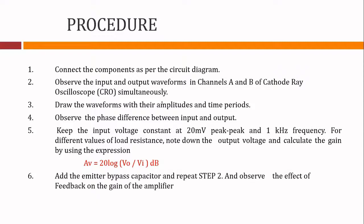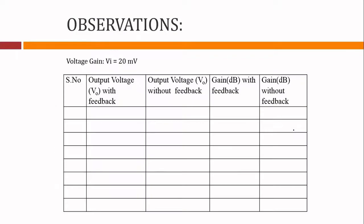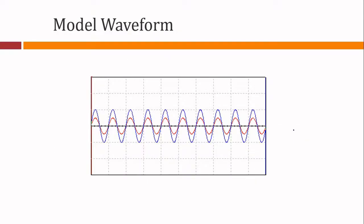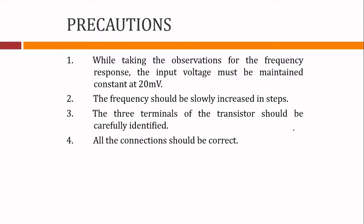When mounting a circuit, ensure continuity between circuit components. The important procedural point is to keep the input voltage constant at 20 mV peak-to-peak, using the function generator. This is the observations table along with the model waveforms — the blue signal is the input and red is the output voltage. These are the precautions: while taking observations for the frequency response, the input voltage must be maintained at a constant value of 20 mV.